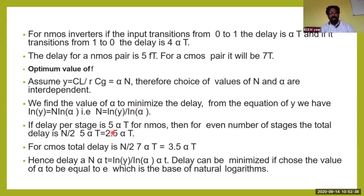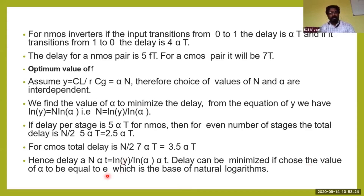For NMOS with even number of stages, total delay is (N/2)×5×alpha×t = 2.5×alpha×t. For CMOS it is (N/2)×7×alpha×t = 3.5×alpha×t. The total delay equals N×alpha×t = ln(Y)/ln(alpha) × alpha×t. The delay can be minimized by choosing alpha equal to e, the base of the natural logarithm.